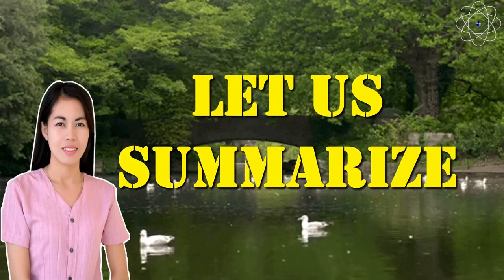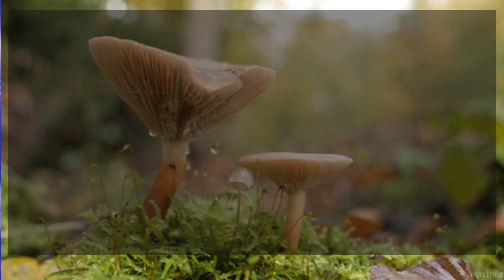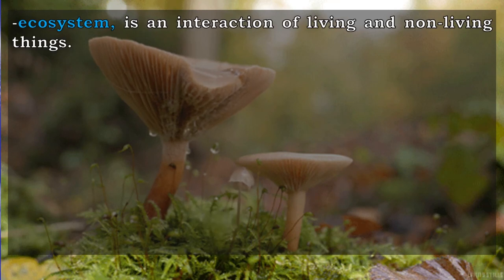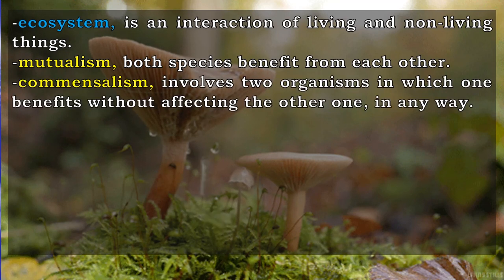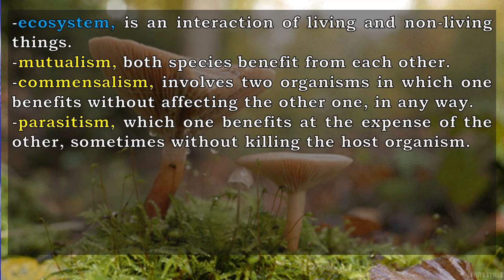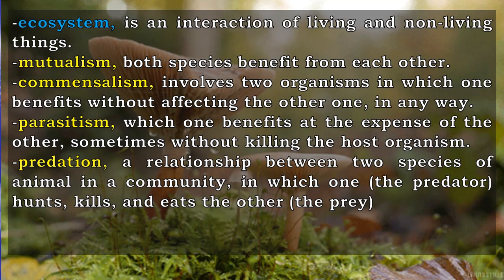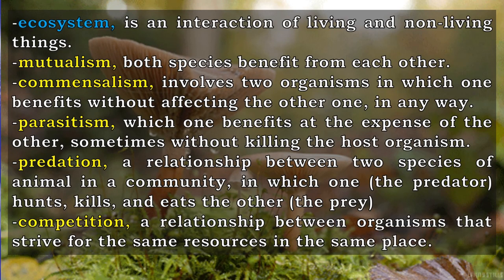To sum up: an ecosystem is an interaction of living and non-living things and has ecological relationships, namely — mutualism, where both species benefit from each other; commensalism, where one organism benefits without affecting the other; parasitism, where one benefits at the expense of the other, sometimes without killing the host; predation, a relationship where the predator hunts, kills, and eats the prey; and competition, a relationship between organisms that strive for the same resources in the same place.